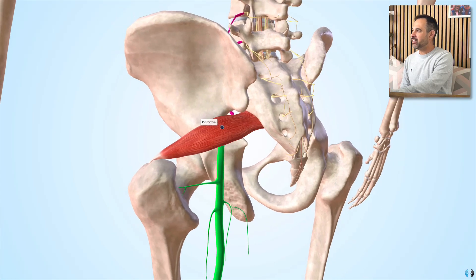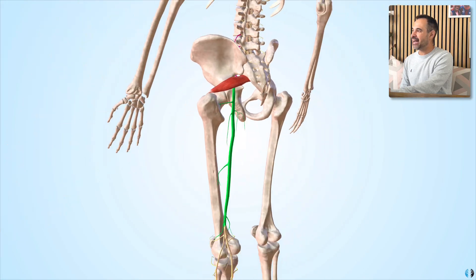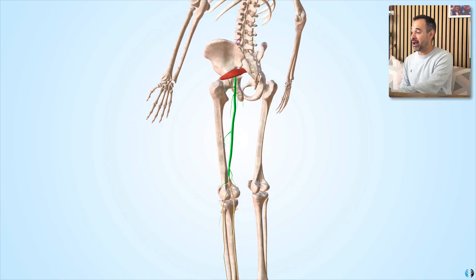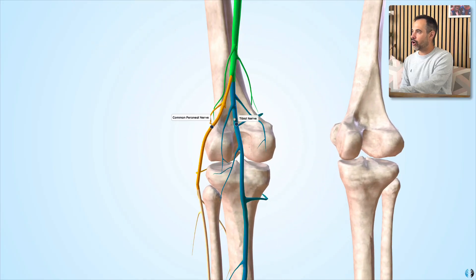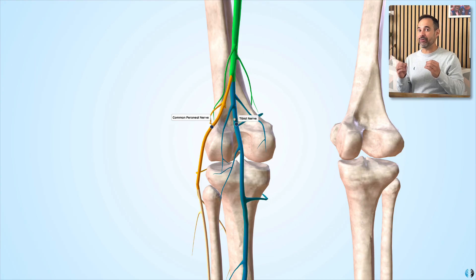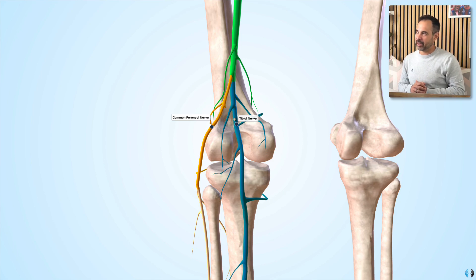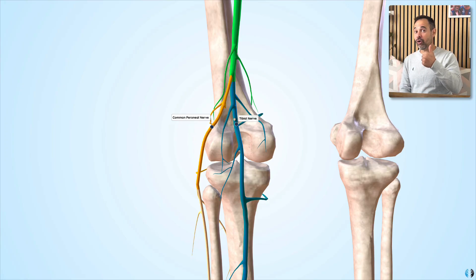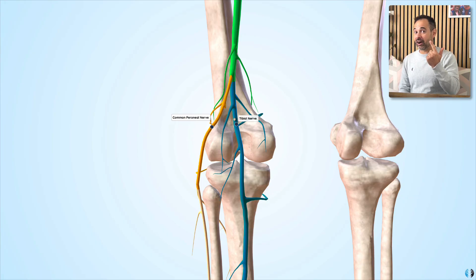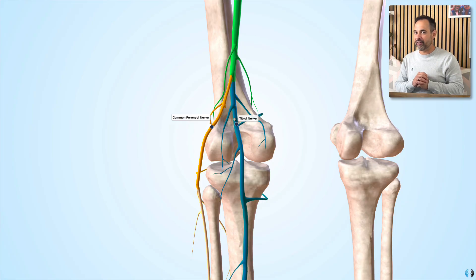The sciatic nerve then travels underneath the piriformis muscle and down the back of the thigh, where it splits at the knee into the common peroneal nerve and the tibial nerve. This is really important when we think about the signs and symptoms for our sciatic patients. To summarize the anatomy: nerve roots L4, L5, S1, S2, S3 run down the posterior thigh and split around the knee into the tibial nerve and the common peroneal nerve. Why does this matter? Let's go through the clinical signs.